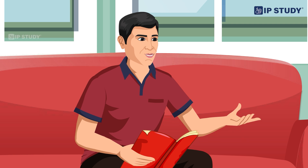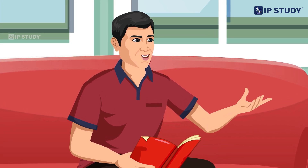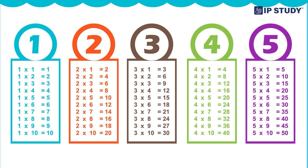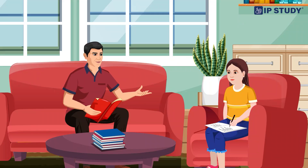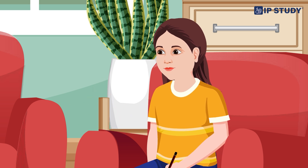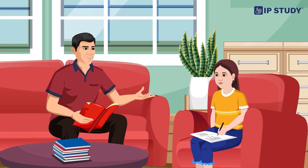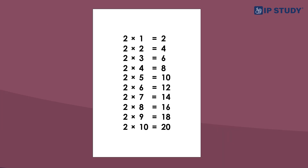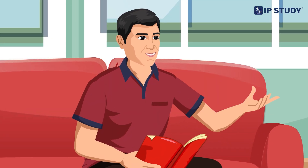Great job Urvashi, you're getting the hang of it! Now let's look at the multiplication tables for numbers two to five. Now, do you know about tables? No dad, I don't know about tables. Okay, don't worry, I'm here to help. Let's start with the multiplication table of two. Look Urvashi, here's the multiplication table of two — it shows us what happens when we multiply two by different numbers.